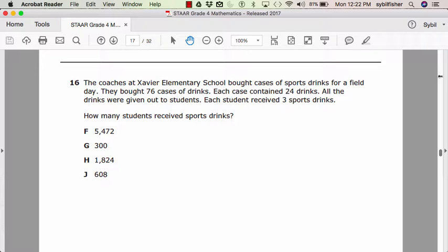How many students received sports drinks? F, five-thousand-four-hundred-and-seventy-two. G, three-hundred. H, one-thousand-eight-hundred-and-twenty-four. And J, six-hundred-and-eight.